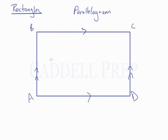What makes a rectangle special from a regular parallelogram is that all of the angles are right angles. These are all 90-degree angles.